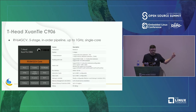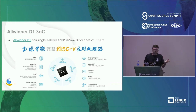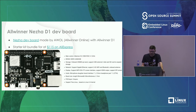T-Head has multiple processor designs. Another core is the C906 — a five-stage in-order pipeline up to 1 GHz. Allwinner, familiar from their ARM SoCs, has taken the C906 core and put it into a SoC called the D1 — probably the first low-cost RISC-V SoC that can run Linux reasonably well. Allwinner Online, their development division, produced the official dev board called the Nezha, starting around $115, available in several configurations with 1 or 2 GB of memory.